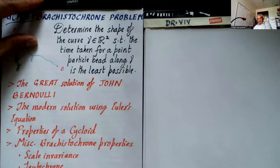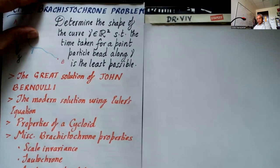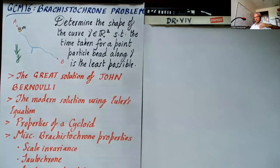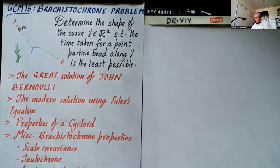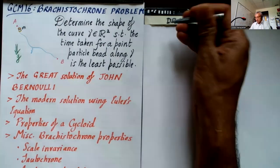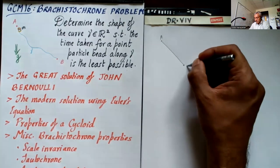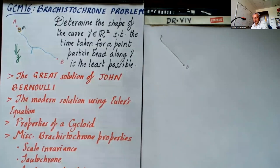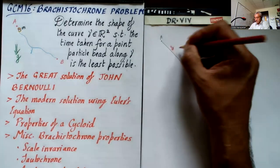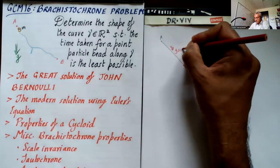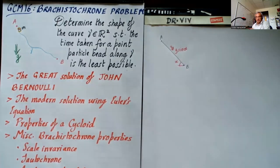First of all, let's try to understand why a straight line is not the answer. The straight line is the shortest distance in space between two points, but it's not the shortest distance in time between two points. If we connect points A and B with a straight line, the slope is constant and the acceleration is going to be g sine alpha, where alpha is the angle this incline makes.